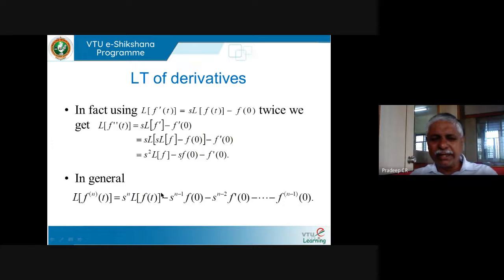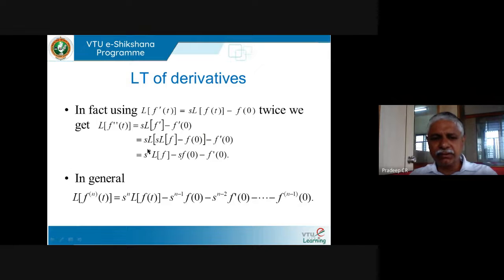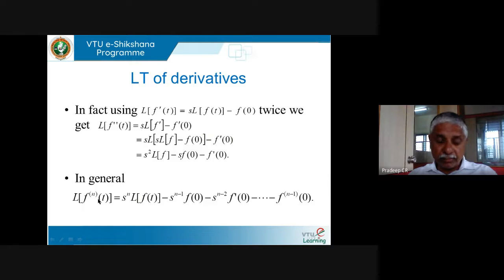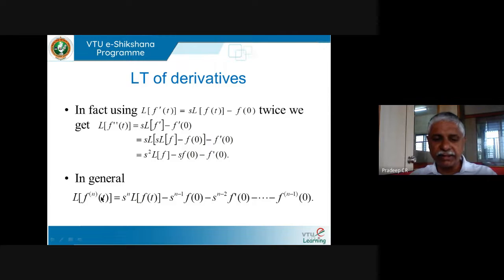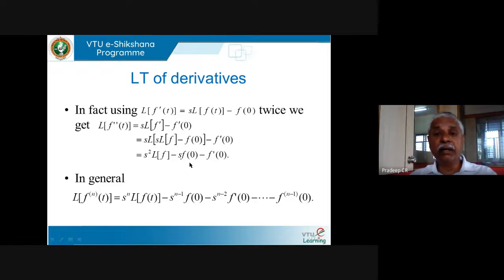In general, for the nth derivative, L{f⁽ⁿ⁾(t)} = sⁿ·F(s) − sⁿ⁻¹·f(0) − ... − f⁽ⁿ⁻¹⁾(0). From an examination standpoint, we typically need up to the second derivative, rarely the third. So L{f''(t)} = s²·L{f} − s·f(0) − f'(0) is what you need.